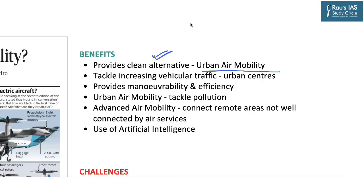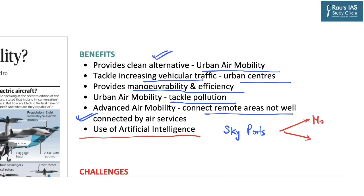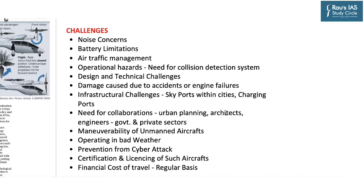Apart from using electric propulsion systems, these aircraft will also use fuel cells and batteries. The Government of India is looking forward to eVTOL aircraft based on increasing vehicular traffic in India, connecting remote areas and because they are cleaner technologies. The overall benefits of eVTOL aircraft include providing clean alternative urban air mobility, tackling increasing vehicular traffic especially in urban centers, better maneuverability and efficiency, tackling air pollution, and connecting remote areas not well connected by air services. These eVTOL aircraft will not need any runway but will need skyports to take off and land, and with the development of science and technology, some of these aircraft may use artificial intelligence and may be manned or unmanned.